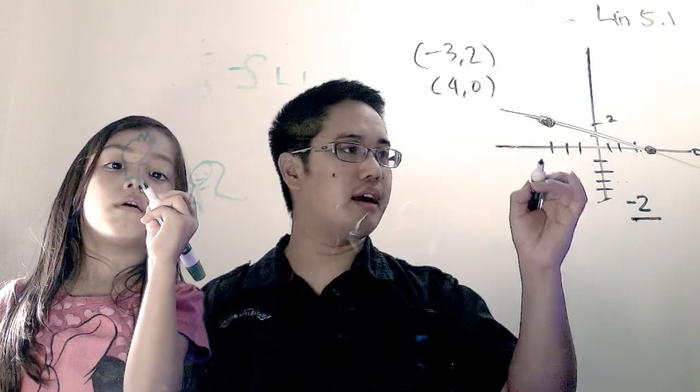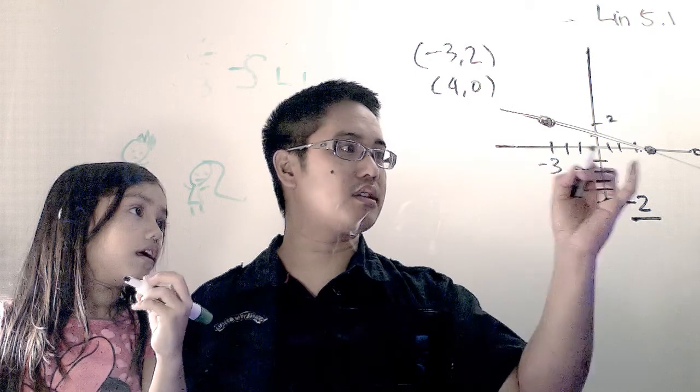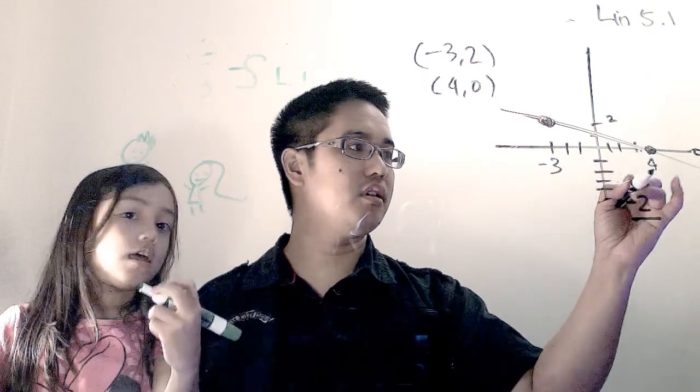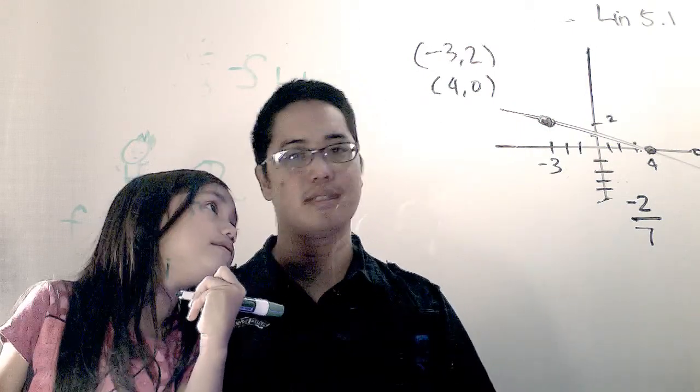My run, on the other hand, would be the x-coordinate over here is negative three, the x-coordinate over here is four, so that would be across seven. So my slope would be negative two sevenths.